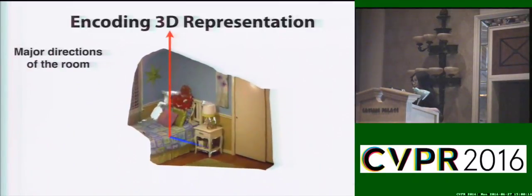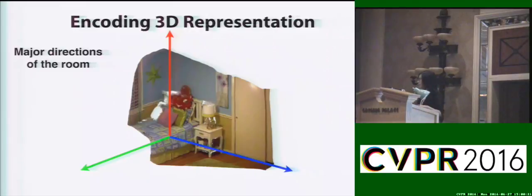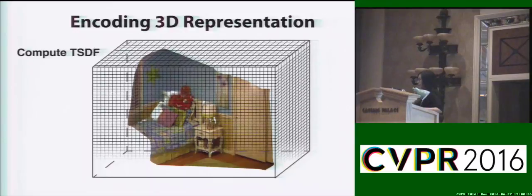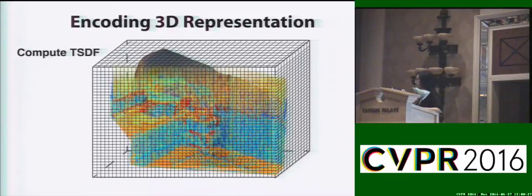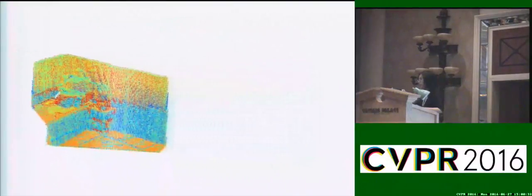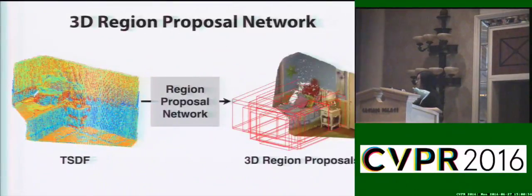Starting with a 3D scene, our algorithm first estimates the three major directions of the room based on the Manhattan assumption and then aligns the point cloud with the gravity direction. We use the directional truncated signed distance function (TSDF) to encode the 3D geometries of the scene, and input these 3D volumes to the region-proposal network to get 3D region proposals.